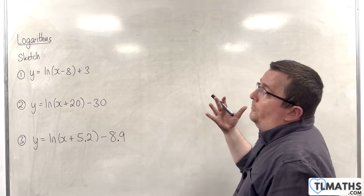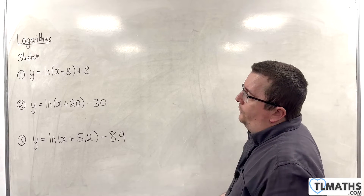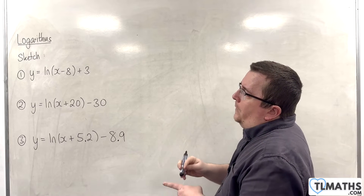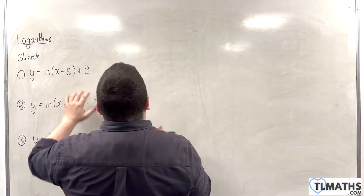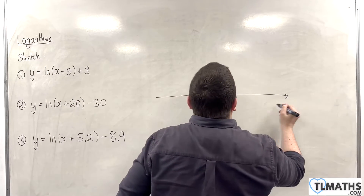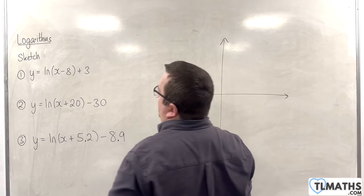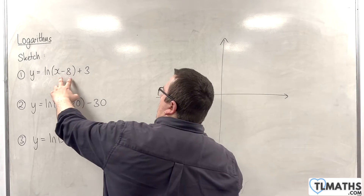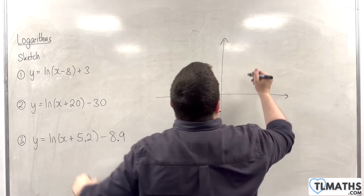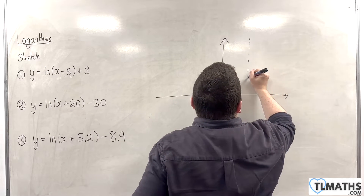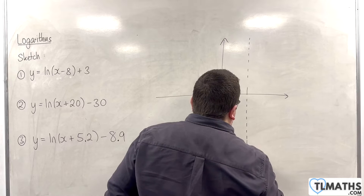In this video, I'm going to go through some examples of sketching these log curves. So, first one: y equals the natural log of x take away 8 plus 3. First thing you want to do is identify where the vertical asymptote is, and that will be when the bracket is 0, which is when x is 8. So we can draw in a vertical asymptote at x equals 8.